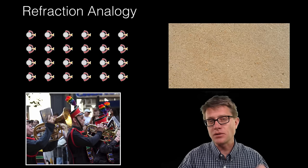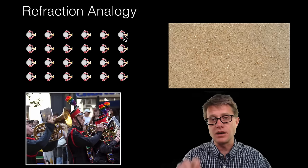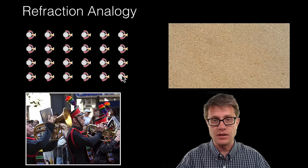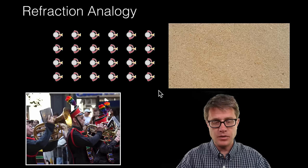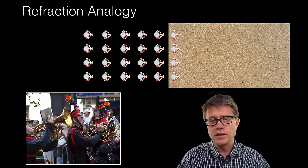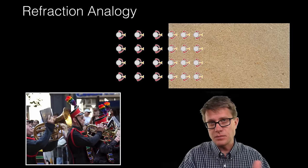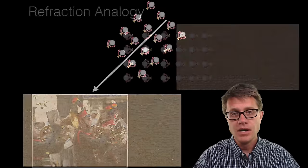Here is an analogy to help you remember refraction. Imagine a marching band — trumpet players viewed from above — all walking together and trying to keep the spacing between them the same. As they march down a road toward a patch of sand, the ones that enter the sand first slow down. But since they keep that distance between them the same, the angle at which they came in equals the angle at which they came out, so we do not see refraction.